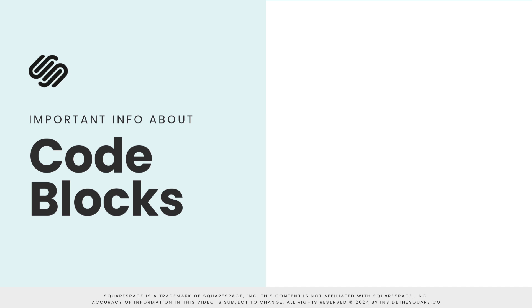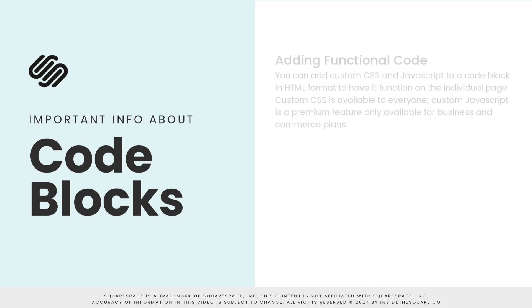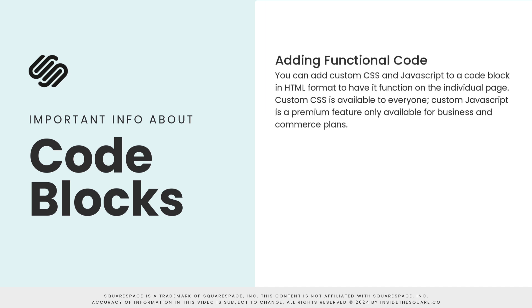Here are some important things to know about the code block in Squarespace. This code block can be used to render JavaScript and CSS on an individual page. To have the code function on the page, you need to enter it in HTML with specific JavaScript and CSS labels. To learn more, check out the related content linked below.